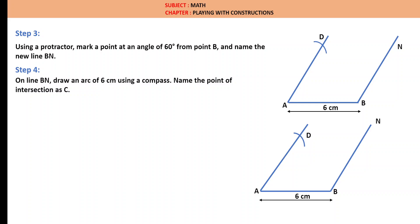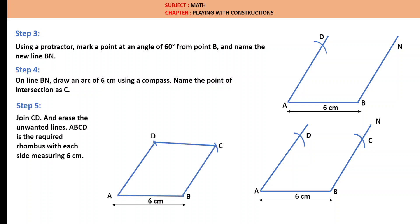Step 4: On line BL, let us draw an arc of 6 cm using a compass. Name the point of intersection as C. Step 5: Join CD and erase the unwanted lines. ABCD is the required rhombus with each side measuring 6 cm.